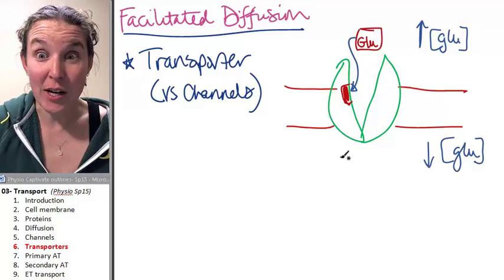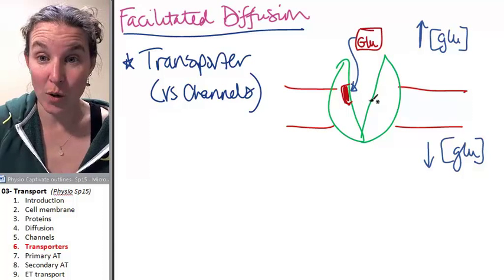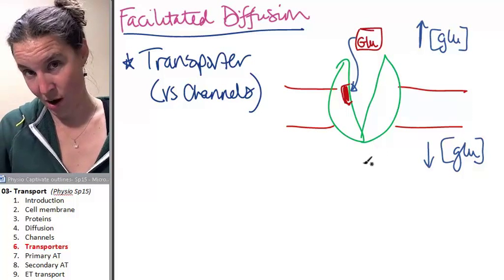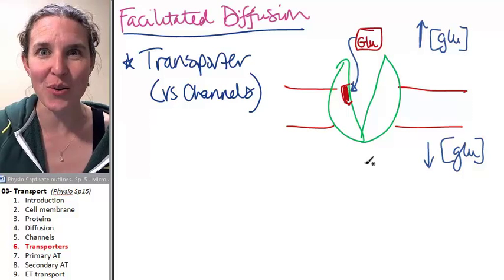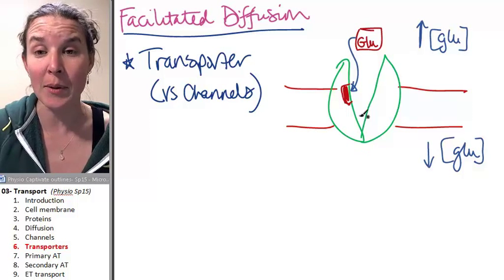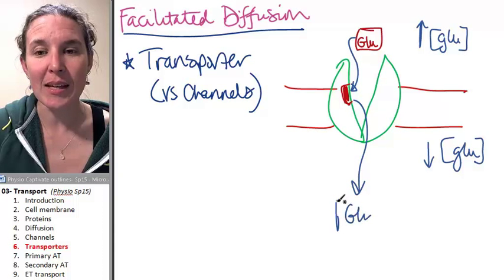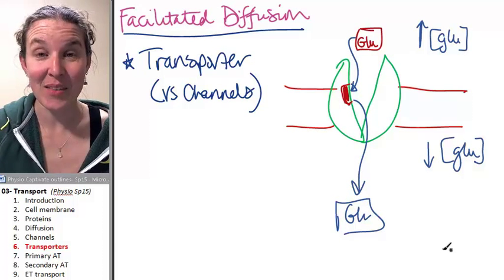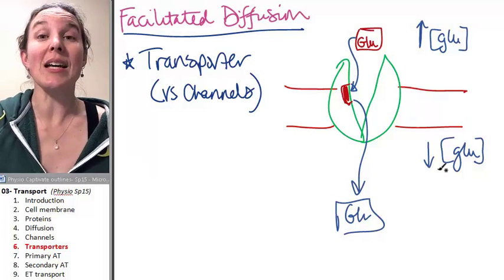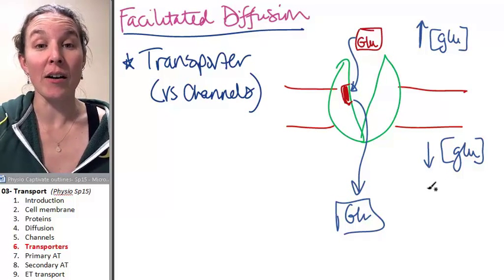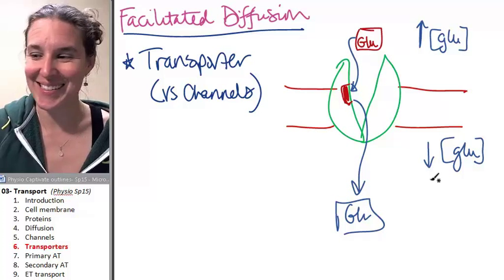This specific transporter that I'm talking about is going to change shape. I didn't draw it all out, but that would be really cool in your notes to draw a picture of the whole thing happening. It's going to dump the glucose inside the cell, and it will dump the glucose in the area of low concentration.